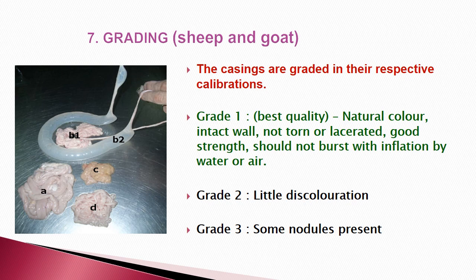Grading is done based on calibration — that is, diameter. There are three grades for sheep and goat casing. Grade 1 (best quality): natural color, intact wall, no tears or lacerations, good strength, does not burst with inflation. Grade 2: may have some discoloration. Grade 3: may also have some nodules present.